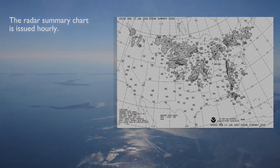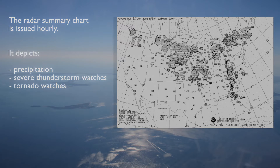The Radar Summary Chart is a graphic issued hourly which is based on radar weather reports. It shows radar precipitation data, severe thunderstorm watches, and tornado watches.